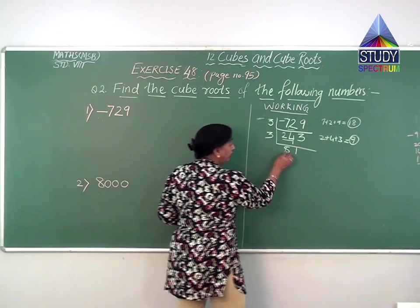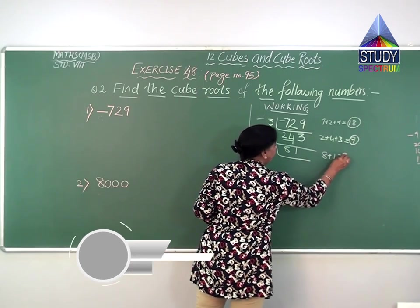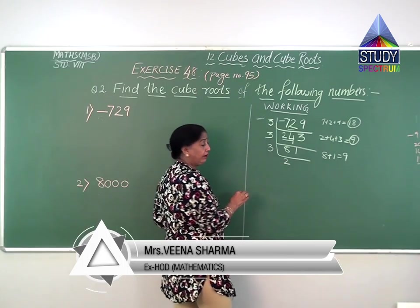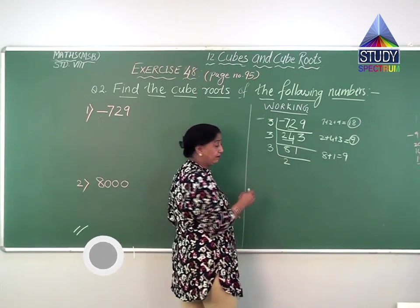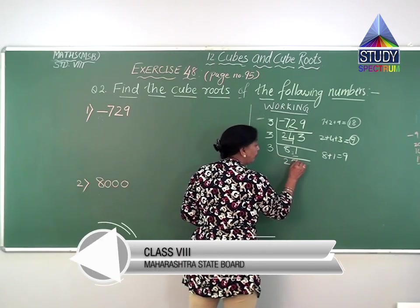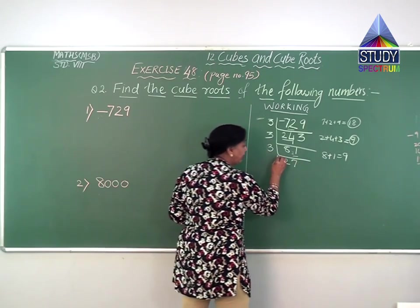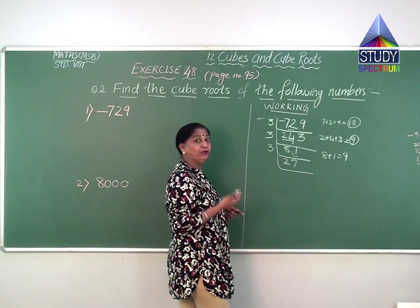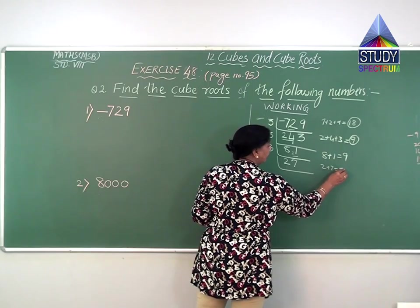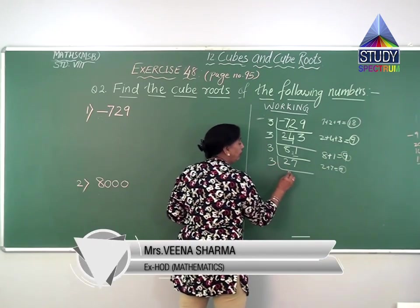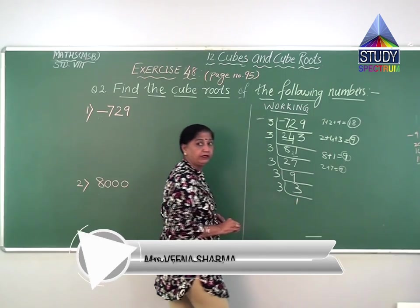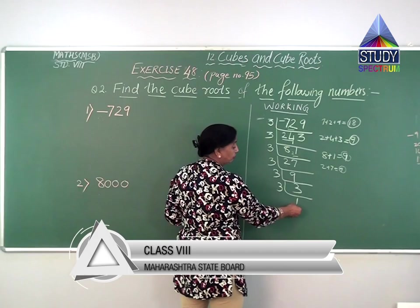We have to further factorize. Again adding digits: 2 plus 2 plus 4 plus 3 gives 9. Since 9 is divisible by 3, we continue with 3. Working: 3 eights are 24, carry 2; 3 ones are 3 plus 2. Then again 81: 8 plus 1 is 9, so again divisible by 3. Continuing: 3 twos are 6; from 8, remainder 2 carries, making 21; 3 sevens are 21. Now we have 27, which is the cube of 3. Again 7 plus 2 plus 7 gives 9, divisible by 3: 3 nines are 27, 3 threes are 9, 3 ones are 3. We reach 1, so factorization is complete.